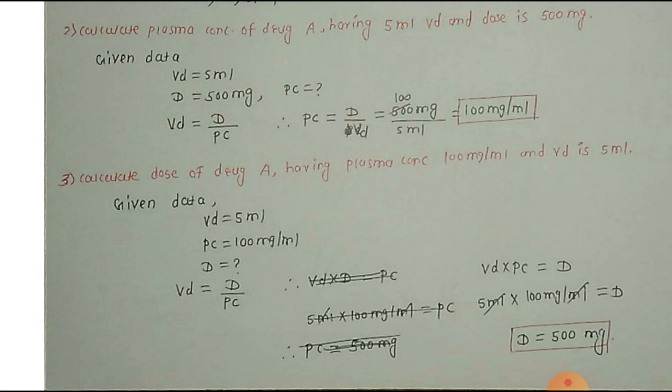Volume of Distribution is equal to dose administered upon plasma concentration. So, formula will be Volume of Distribution into plasma concentration is equal to dose which we have to calculate. So, dose is equal to 5ml into 100mg per ml. ml get cancelled. Dose is equal to 500mg.